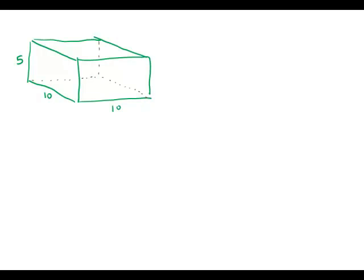A rectangular box is 10 inches wide, 10 inches long, and 5 inches high. What is the greatest possible straight line distance in inches between any two points on the box?